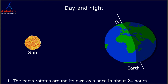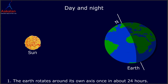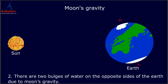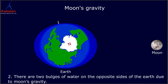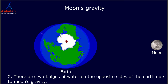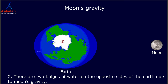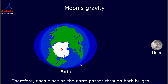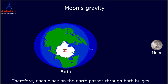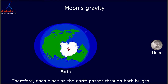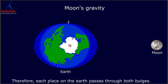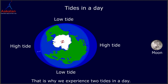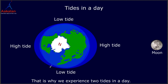We know that, first, the Earth rotates around its axis once in about 24 hours. And two, there are two bulges of water on the opposite sides of the Earth due to the Moon's gravity. Therefore, each place on the Earth passes through both bulges. That is why we experience two tides in a day.